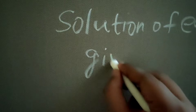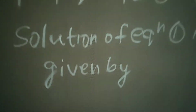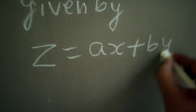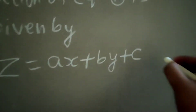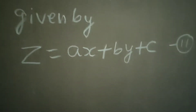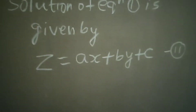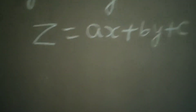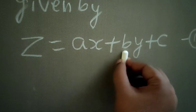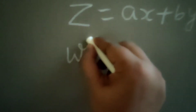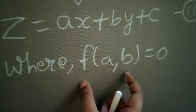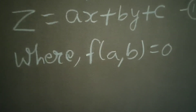Let's name this equation number one. The solution of equation number one is given by z = ax + by + c. Let's name this equation two, because we will make a slight change in this solution. Here, c is a constant and b is also a constant. One more thing is introduced: f(a, b) = 0. Now, how do we get this function? It's a simple thing.